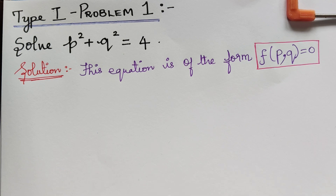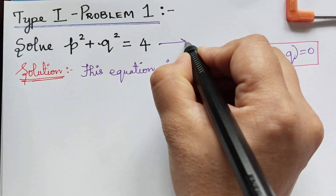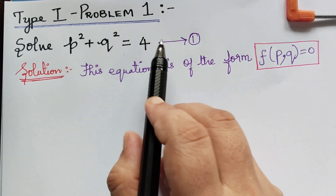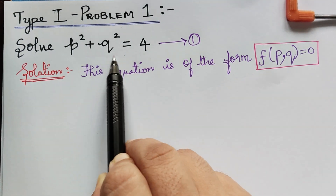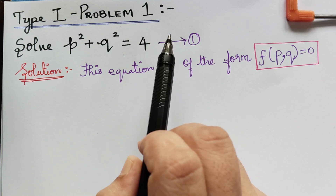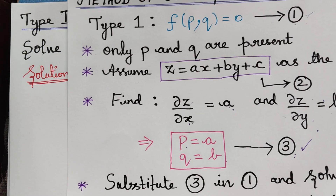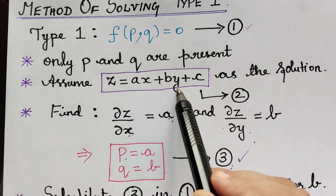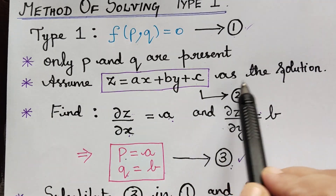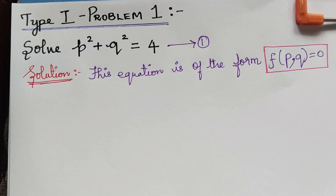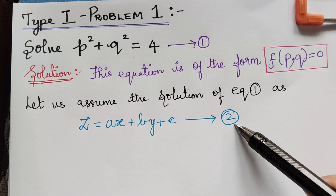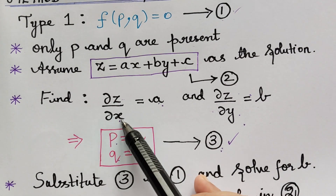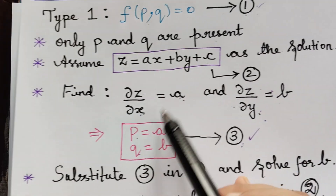We have noted that this equation is of the form f of p, q is equal to 0. We have to take the given equation as equation 1. The second step is we have to assume z equal to ax plus by plus c as the solution of equation 1, marked as equation 2. The next step is to differentiate z with respect to x and y.